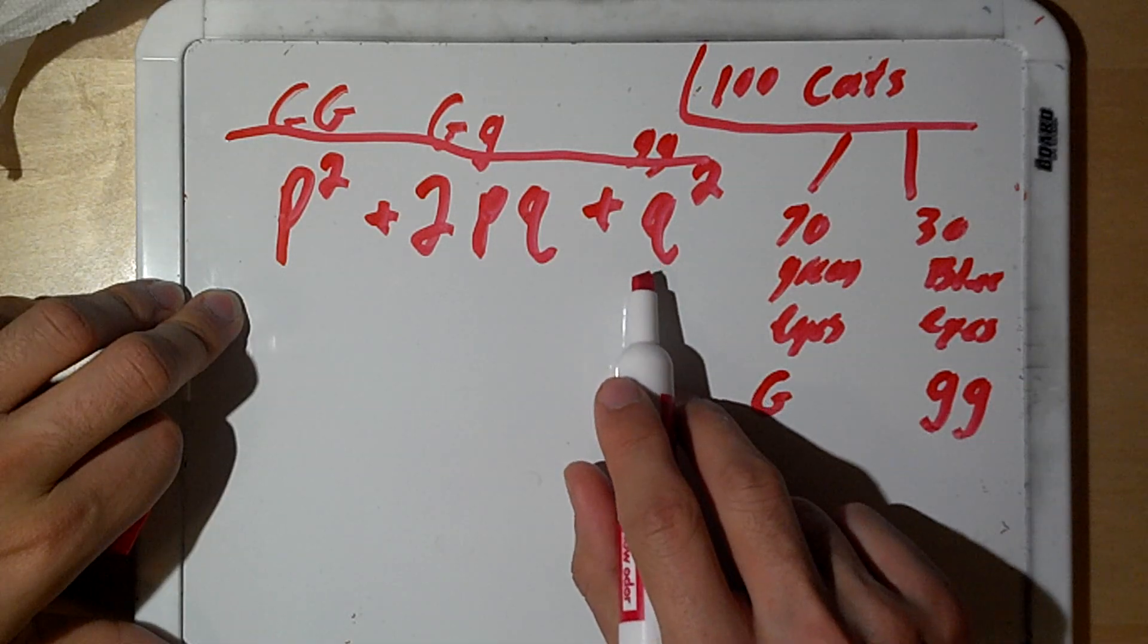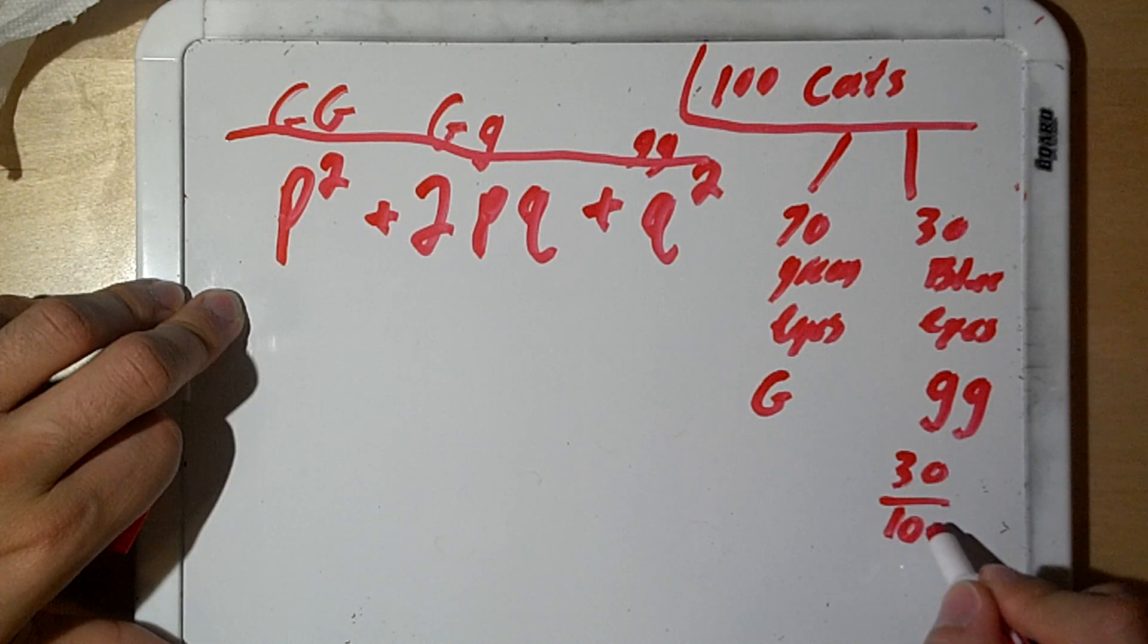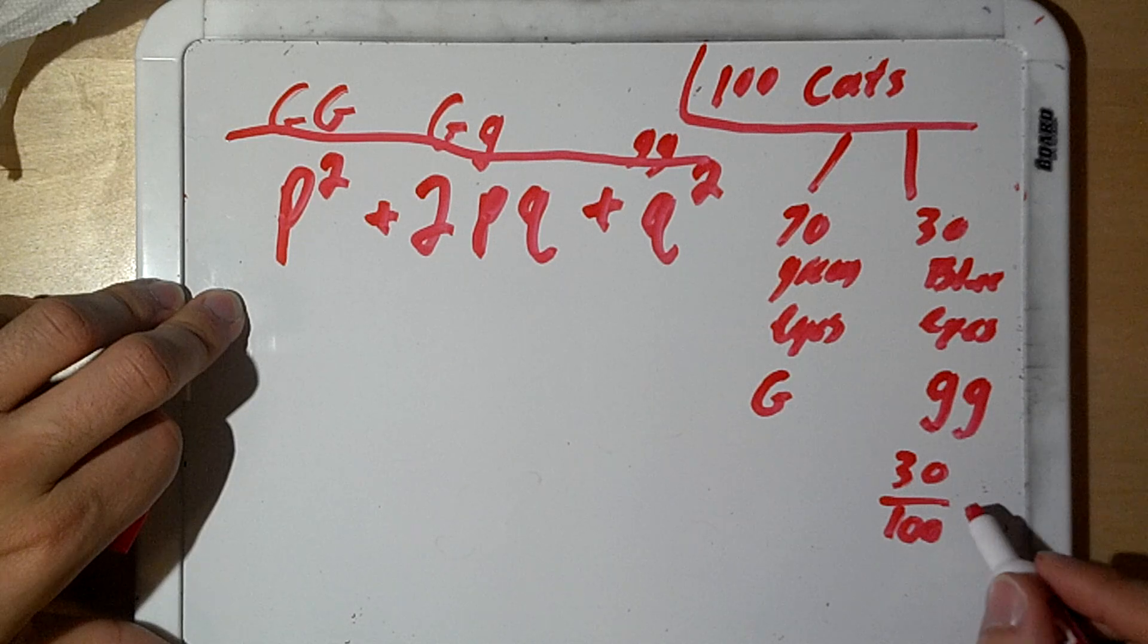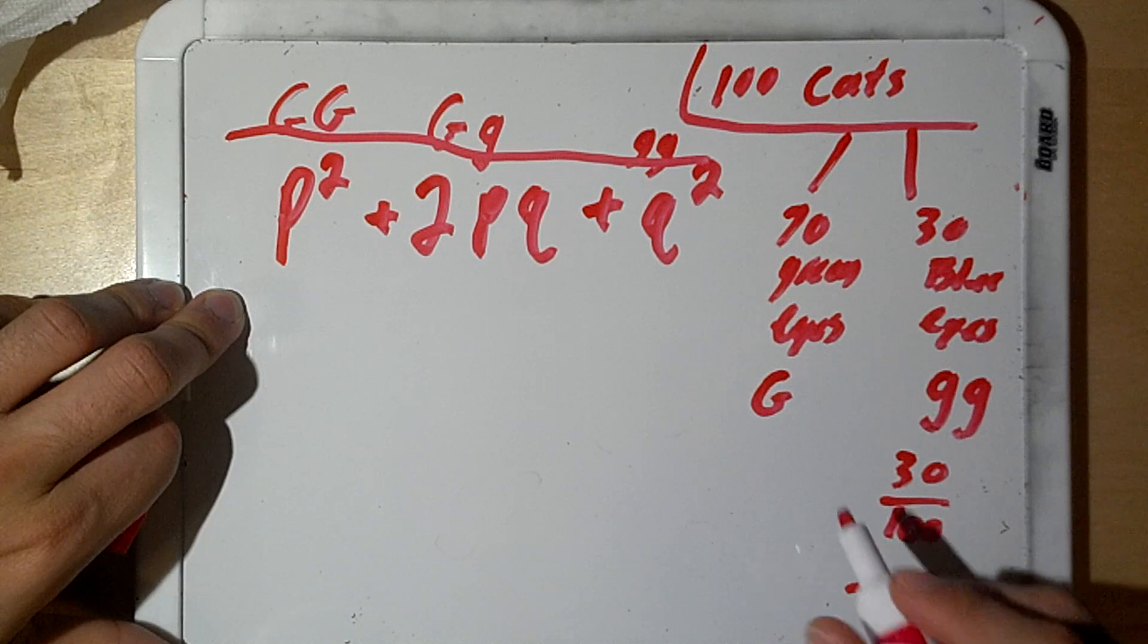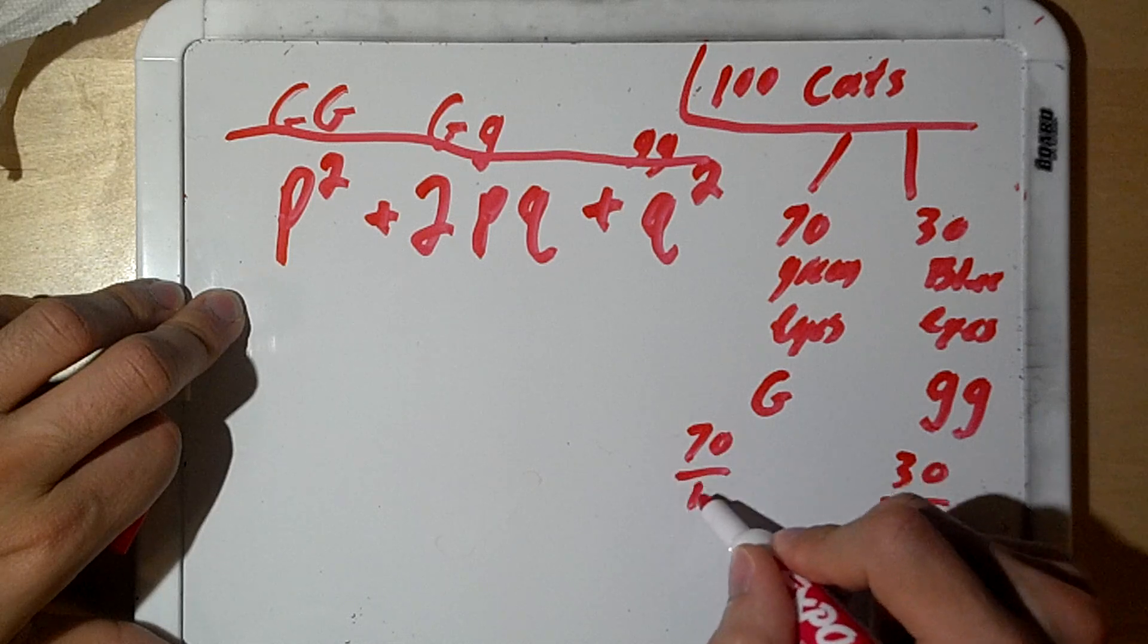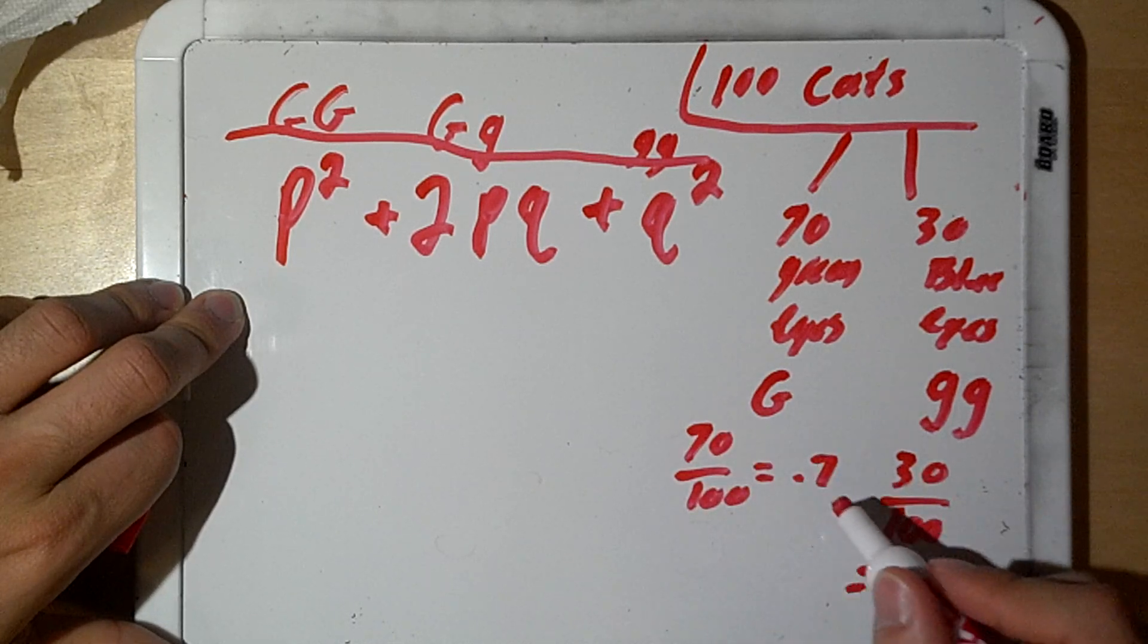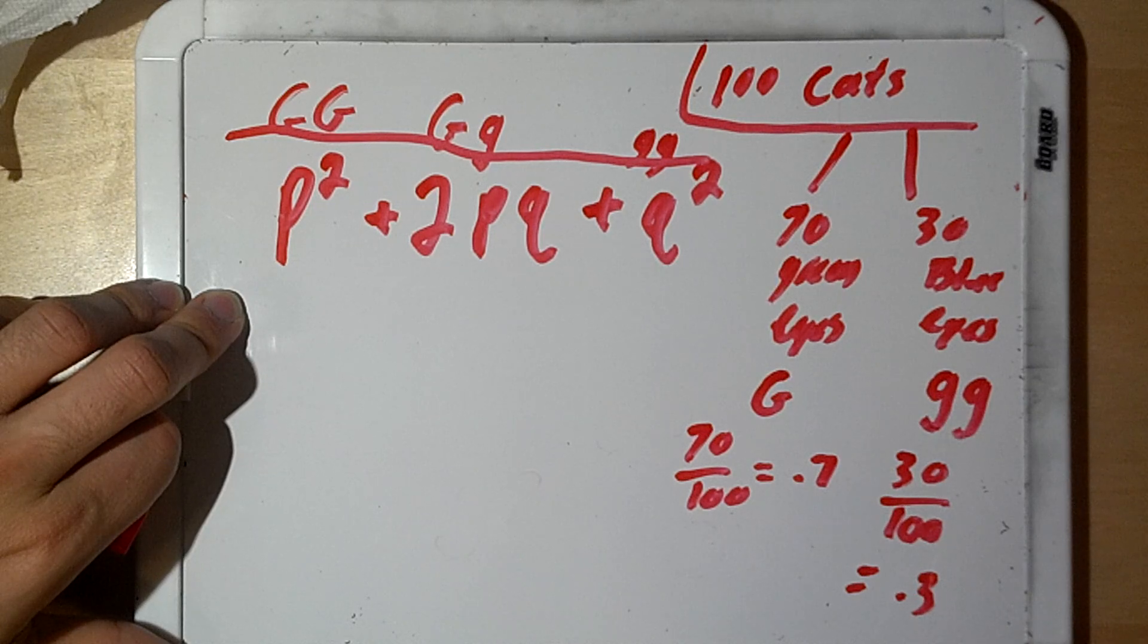So, q² in this case will be 30 over 100. And this is just finding a proportion, so from here, we know 30 over 100 is going to give us 0.3, and we know 70 over 100 is going to give us 0.7. Notice how 0.7 plus 0.3 is going to give us 1. This is a very important theme throughout this equation here.